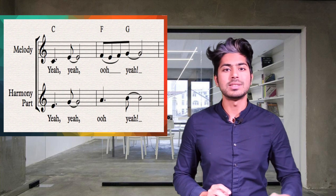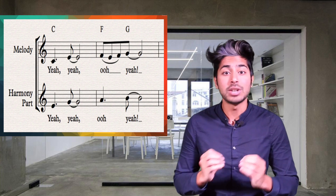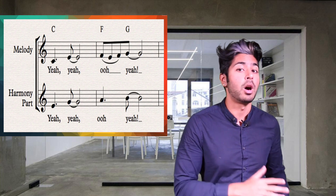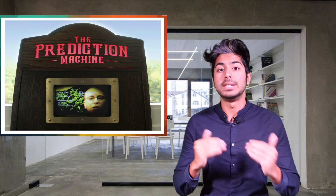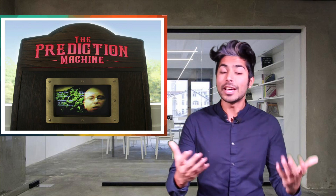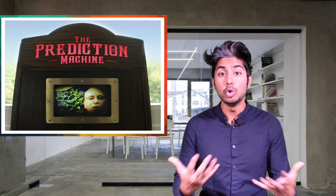That will generate a new song using the newly trained model you've just created. To generate music, we just sample the melody and harmony at each time step and plug it into our trained model. The model will then predict what the next notes will be. The collection of all the predicted notes is our newly generated song.